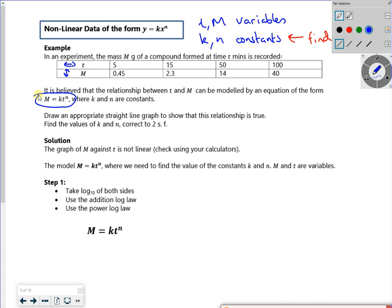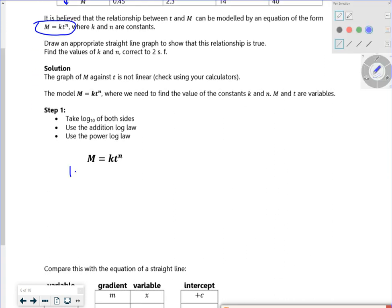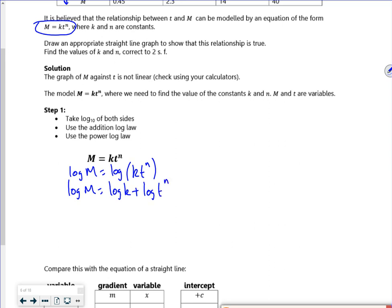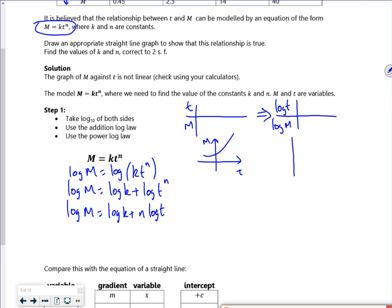Right. So same idea. I've got to do my log laws of both of them. So I've got log of m. So I've got log of k t to the n. Split it up. And then bring the n down. There. So originally, it was t against m. And there's our curve. Put t against m. And what I've done now, if you follow what's happened with t, t has become log t and m has become log m. So now I've got a straight line.